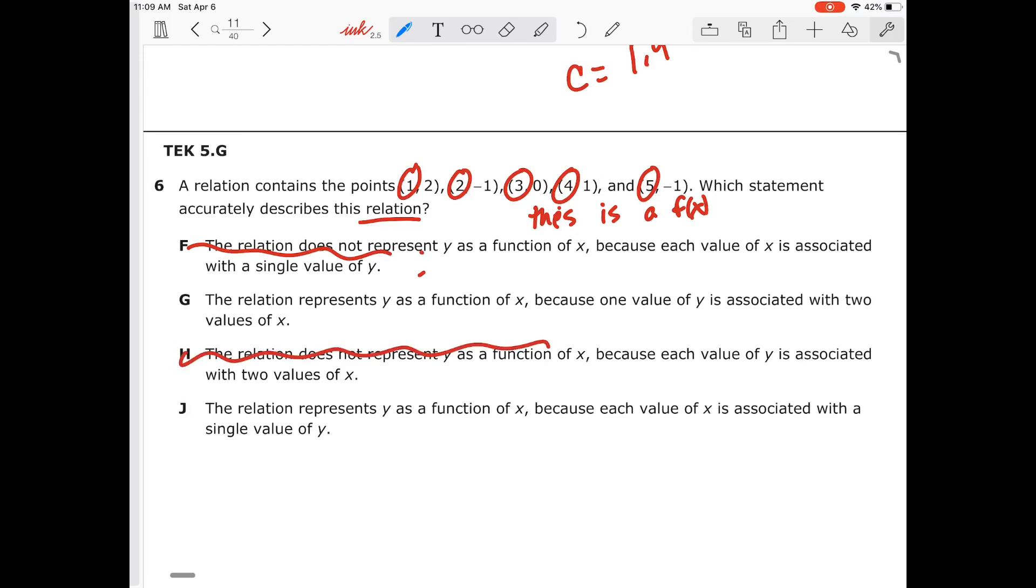Now, both G and J say the relation represents y as a function of x. Let's look at our second statement. Our first one says because one value of y is associated with two values of x. While that is a true statement, that's not enough to say that it's a function.